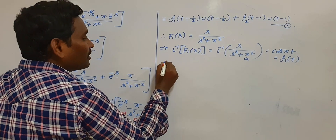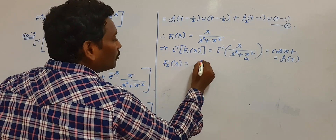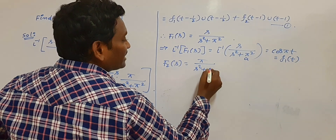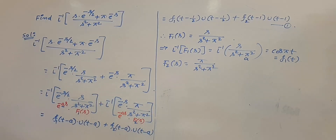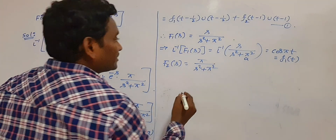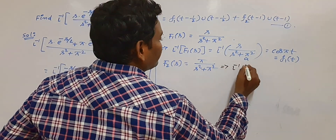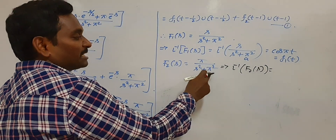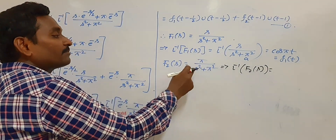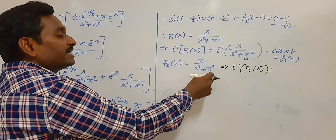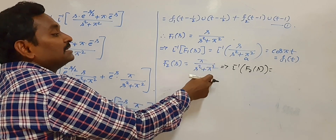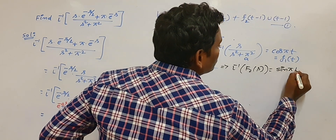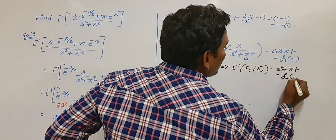What is F2(s)? F2(s) = π/(s²+π²). Calculate its L inverse: L inverse of π/(s²+π²). This is in the form of L inverse of 1/(s²+a²) = (1/a)·sin(at). So we get (1/π)·sin(πt), and π cancels, giving sin(πt). So f2(t) = sin(πt).